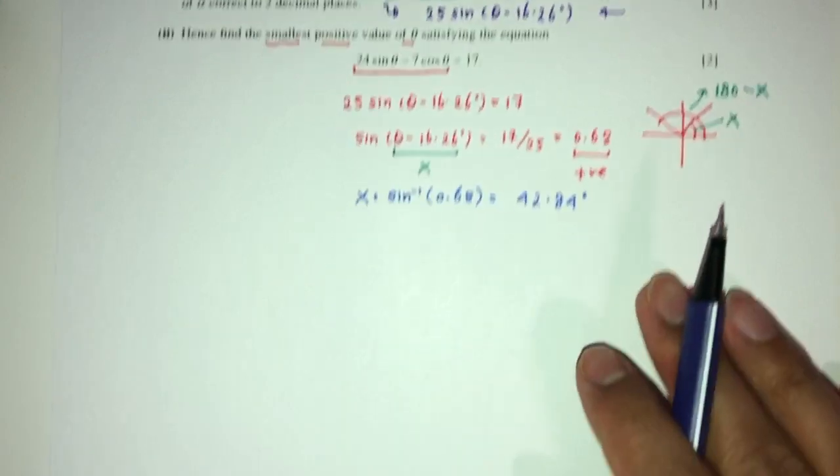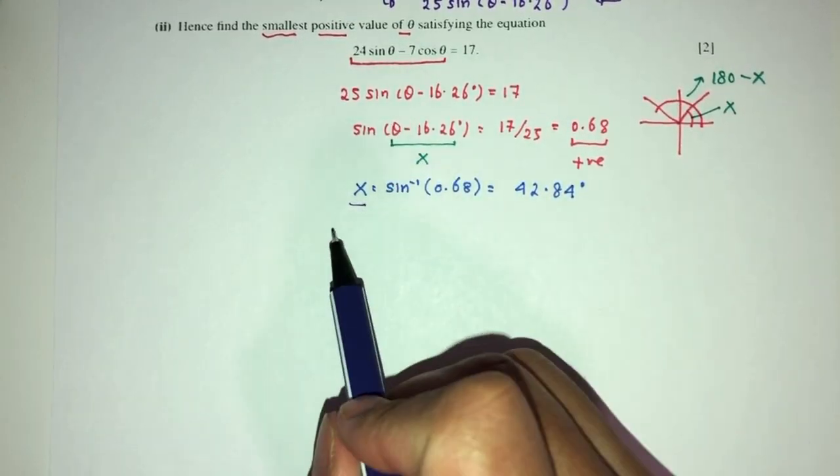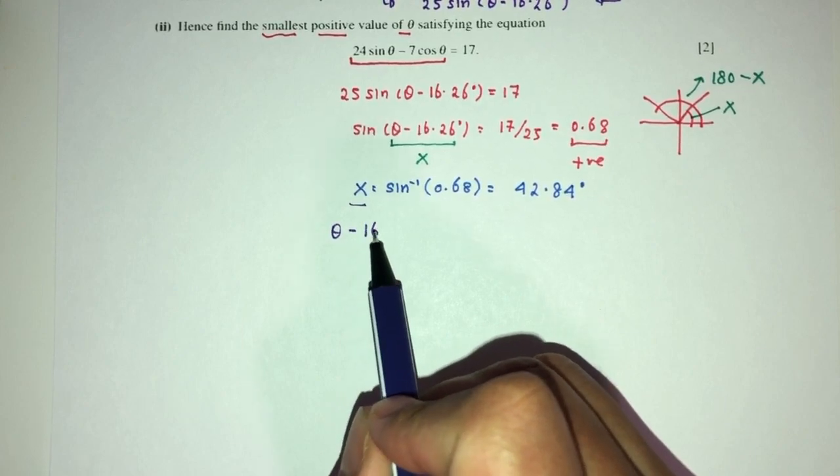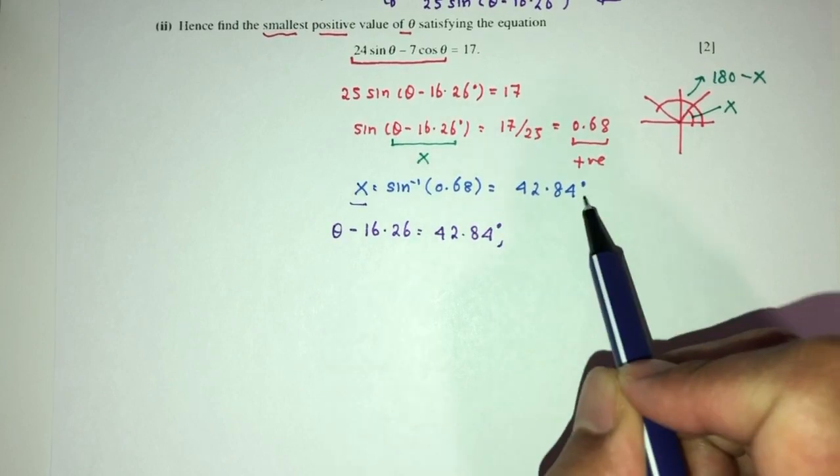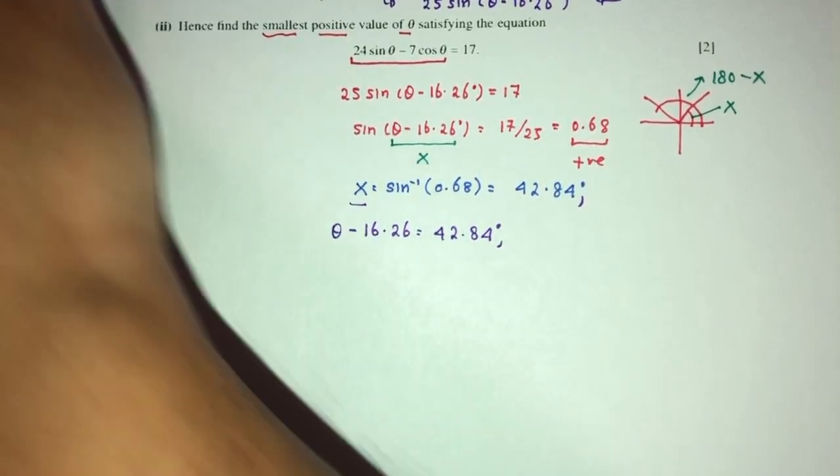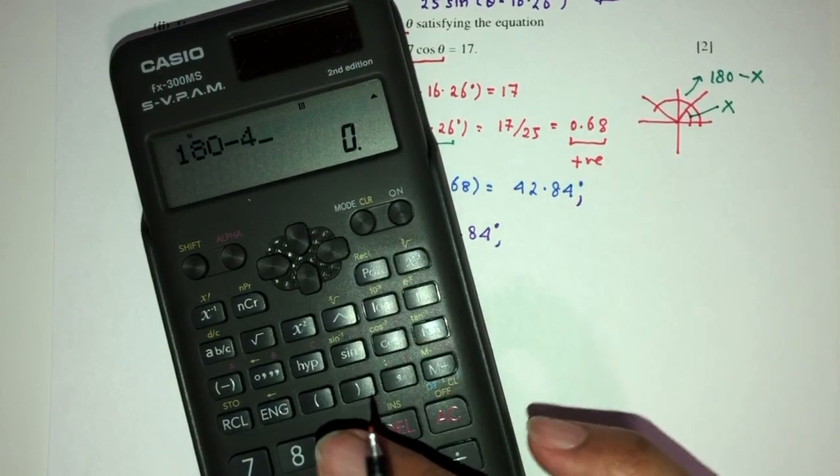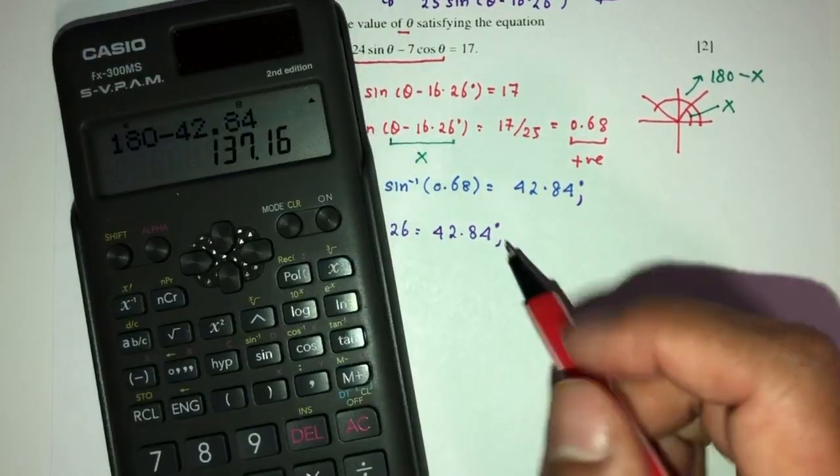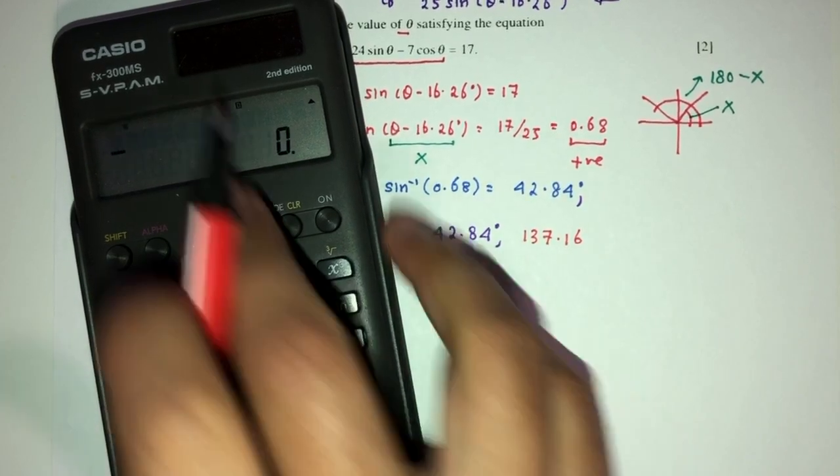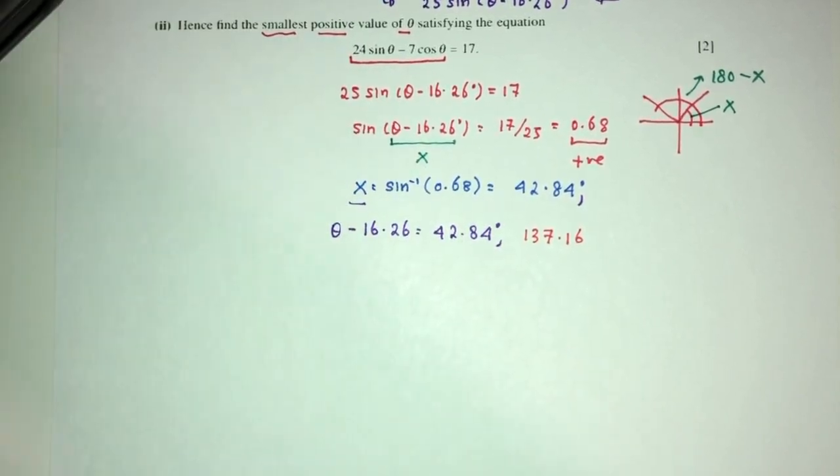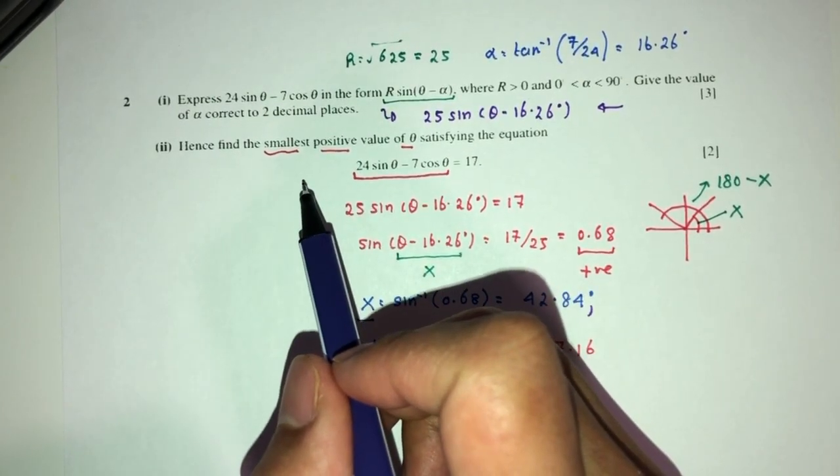So finally, obviously, x is not the value we're trying to find. θ minus this one is the value of x. x is equal to 42.84. But we also have to find the other one, which is 180 minus 42.84, which is 137.60. Okay, so now the question is asking you for something. Find the smallest, so only one value, smallest value of θ.